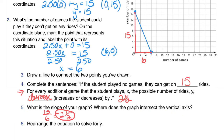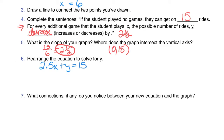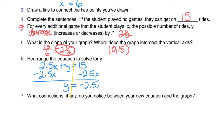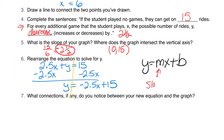Where does the graph intersect the vertical axis? That's going to be at the point (0, 15). In number 6, rearrange the equation to solve for y — get y by itself. Subtracting 2.5x from both sides, I end up with y equals negative 2.5x plus 15. This negative 2.5 is the slope and 15 is the y-intercept. Remember: y equals mx plus b — we just rearranged the equation into that form.